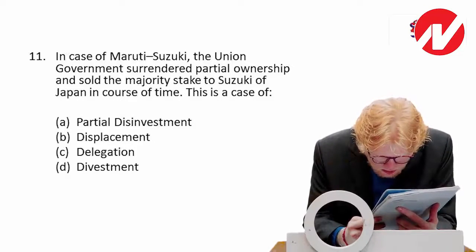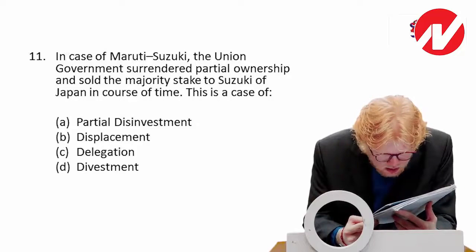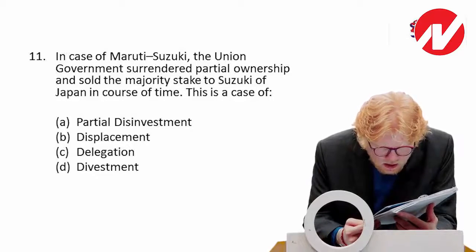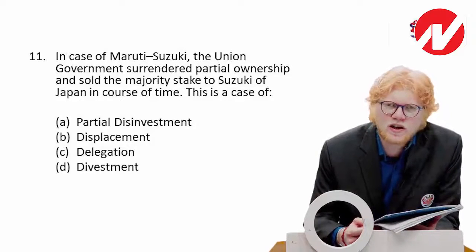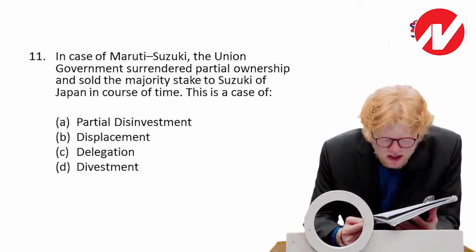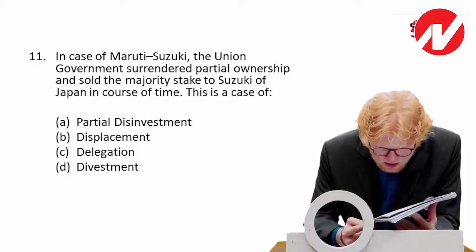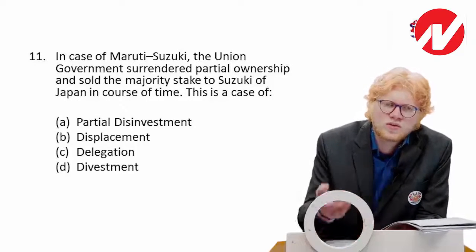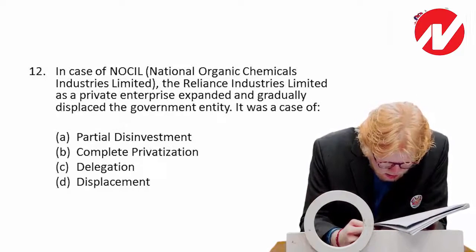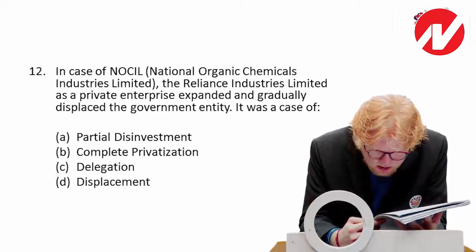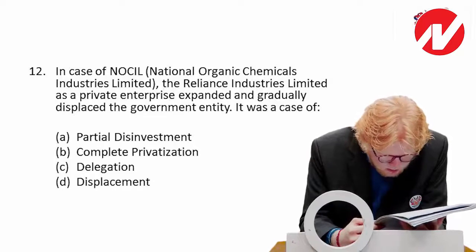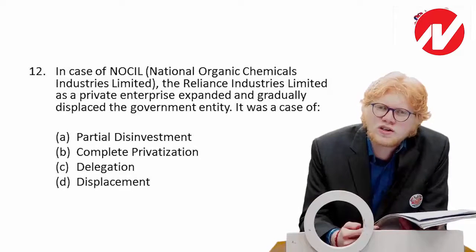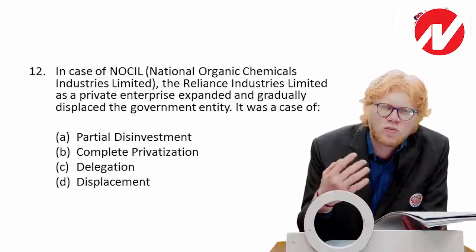Next: in the case of Maruti Suzuki, the union government surrendered partial ownership and sold the majority stake to Suzuki of Japan. This is a case of disinvestment — we are disinvesting our part and passing it to another entity. Next: in the case of NOCIL (National Organic Chemical Industries Limited), Reliance Industries Limited as a private enterprise expanded and gradually displaced the government entity. The word 'displace' itself indicates this is displacement — another form of privatization.